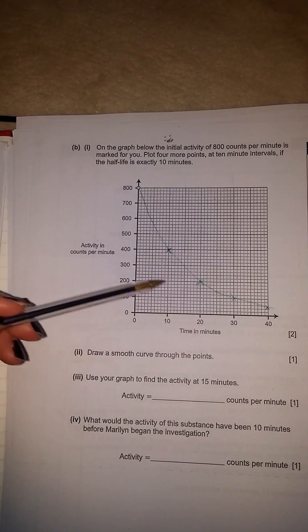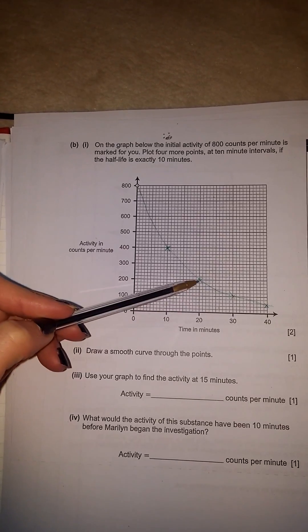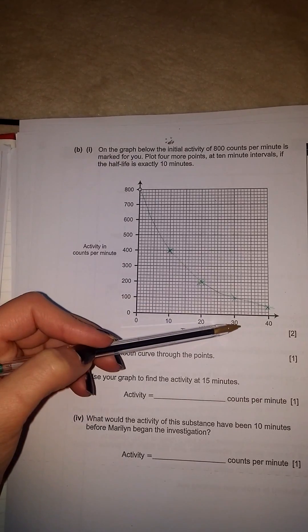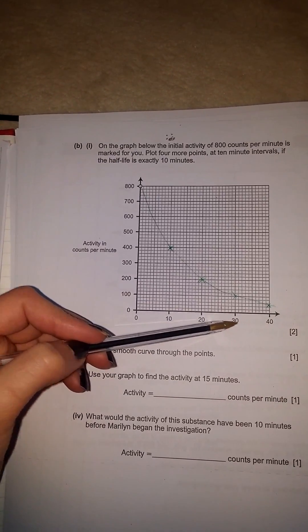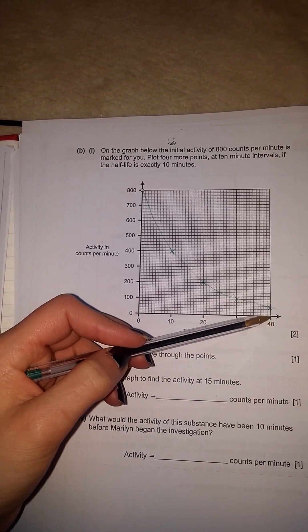Another 10 minutes passed, which is 20, this should be divided by 2, so it should be at 200. Again, divide this by 2 is 100, so that should be another 10 minutes, so that's 30. And 100 divided by 2 is 50, and that will be another 10 minutes, which is 40.